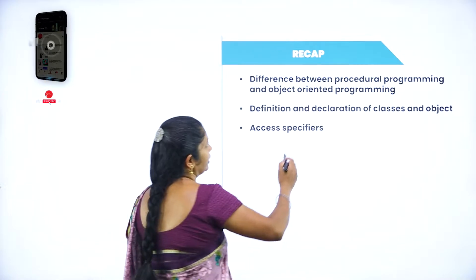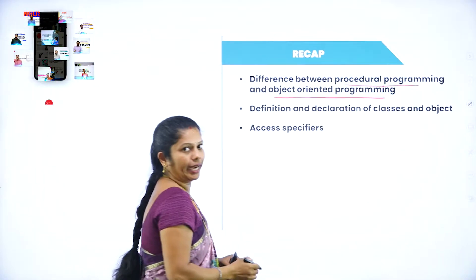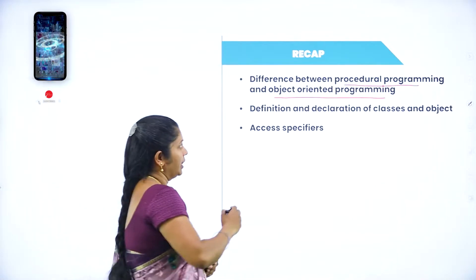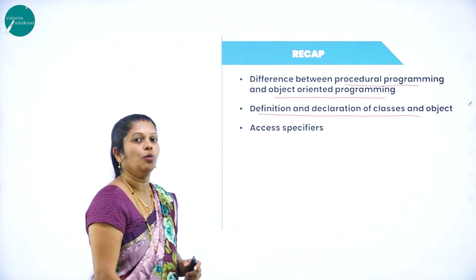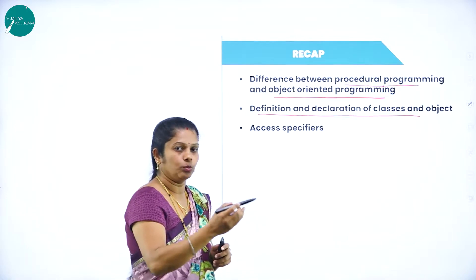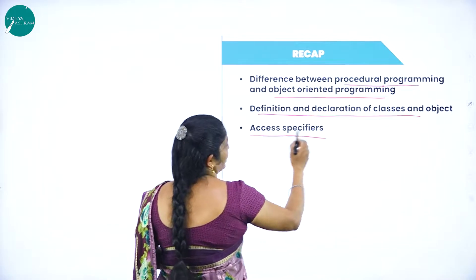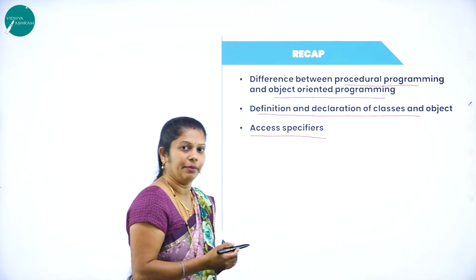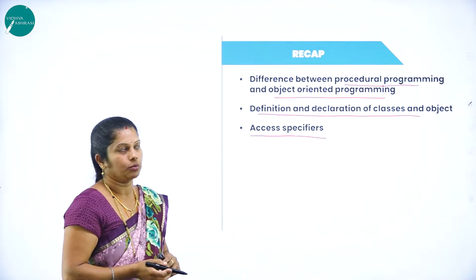As already covered in the previous class, you came to know the difference between procedural programming and object-oriented programming — a very important question for five marks. Then, definition and declaration of a class and object, how to define a class, how to define an object, how to access them. With that, access specifiers — that is the scope of the data, who can access the data members as well as member functions — regarding all that you already came to know.